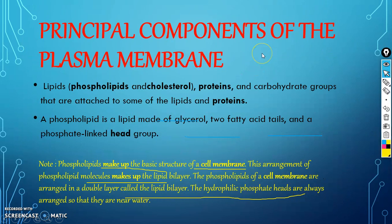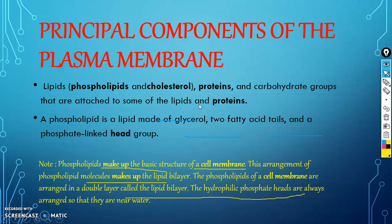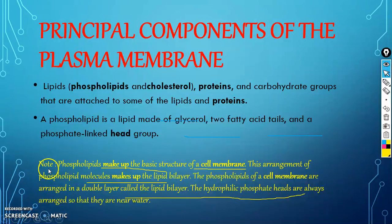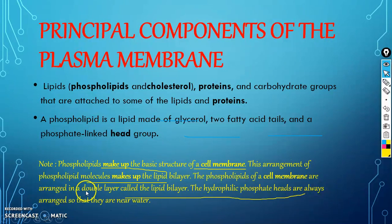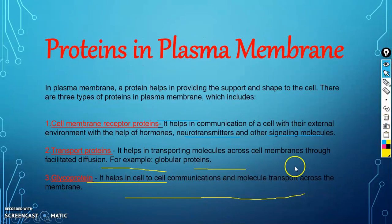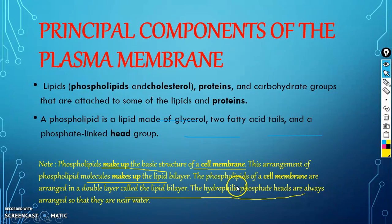The principal components of the plasma membrane are lipids — basically phospholipids and cholesterol — proteins, and carbohydrates, which are attached to some of the lipids and proteins. A phospholipid is a lipid made up of glycerol, two fatty acid tails, and a phosphate-linked head group. Phospholipids make up three basic components of the cell membrane. This arrangement forms the lipid bilayer — a double layer. The hydrophilic phosphate heads are always arranged so that they are near water.